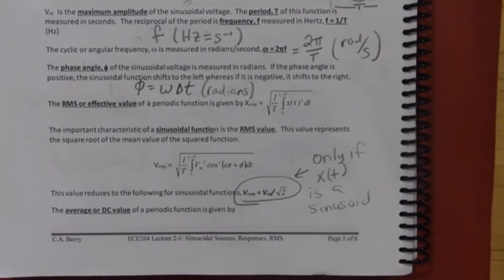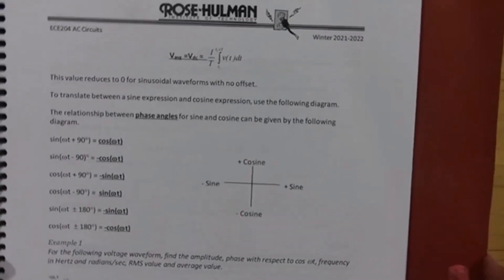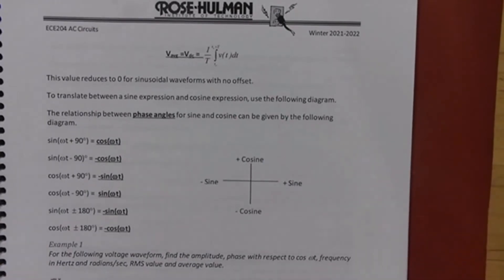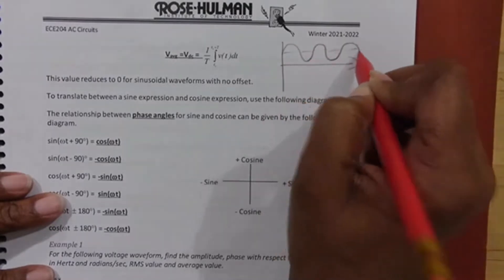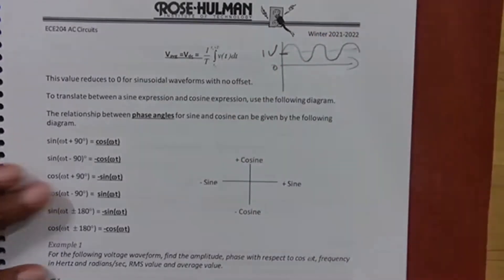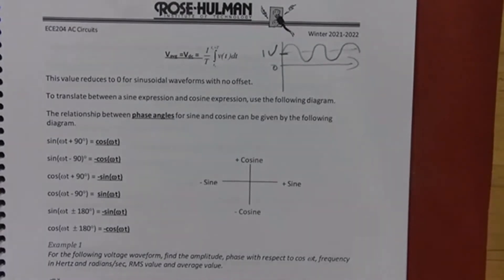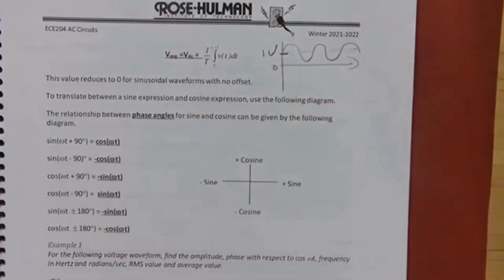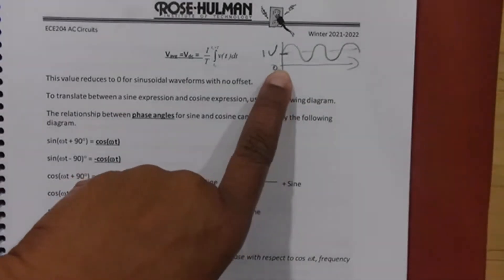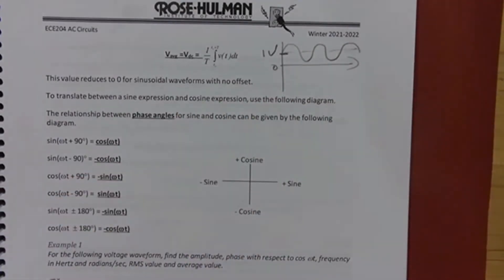The average or DC value is given by one over the period times the integral over one period of v(t) dt. If a sinusoid is shifted up the vertical axis by one volt, then the DC value is one volt. If it has no offset and sits on the zero axis, the DC average value is zero. Offset means the sinusoid is moved up or down the vertical axis.